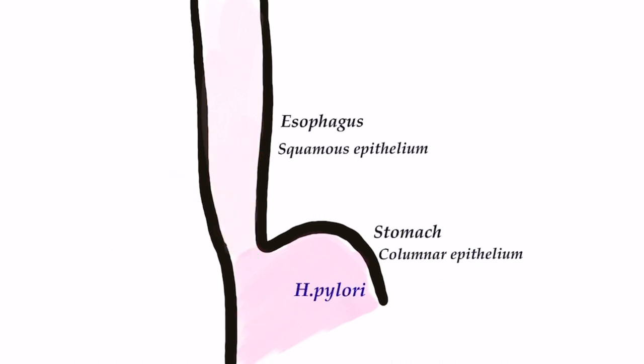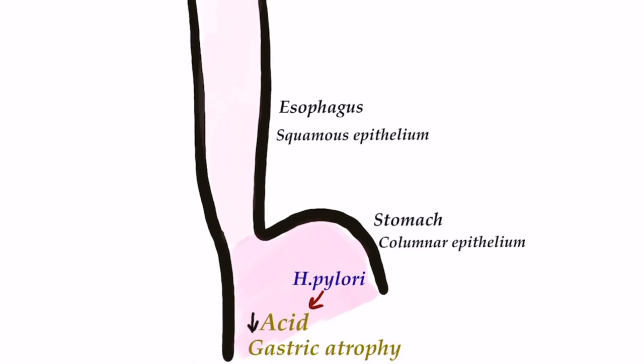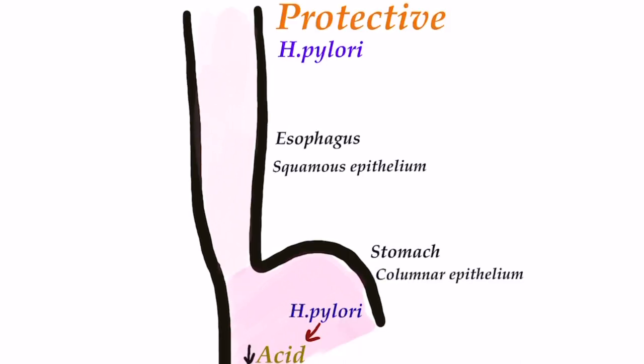The decline of H. pylori infection prevalence in developed countries is associated with increased incidence of GERD complications such as Barrett's. One explanation is that H. pylori reduces intragastric acidity through generation of ammonia or by causing severe corpus gastritis with destruction of gastric parietal cells, thus reducing acid production and protecting against GERD complications. Aspirin and statins may have a protective role in preventing Barrett's and cancer. Overall risk of Barrett's esophagus progressing to adenocarcinoma is around 0.5 percent per year.